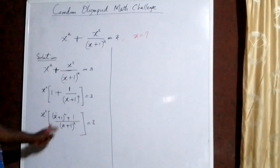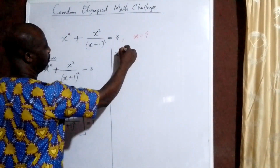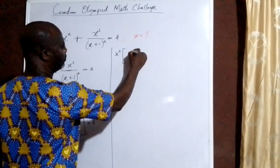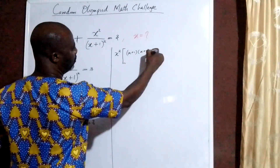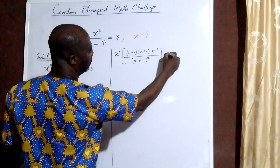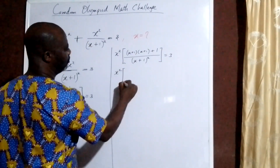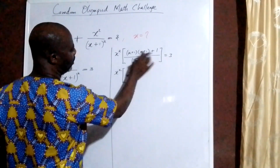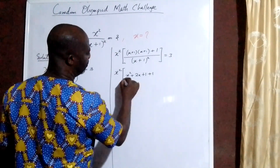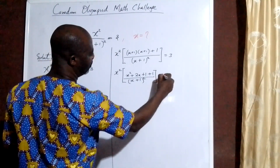Now I am going to expand this bracket open. We have x squared times [(x+1)(x+1) + 1] all over (x+1) squared, equal to 3. This will give us x squared times [x squared + 2x + 1 + 1] all over (x+1) squared, equal to 3.